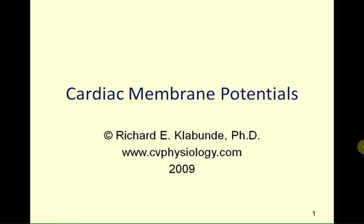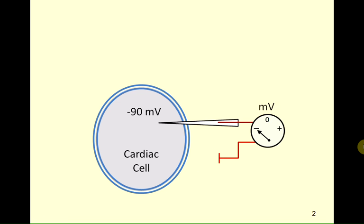Welcome to Cardiovascular Physiology Concepts and a mini lecture on cardiac membrane potentials. Let us begin with a resting non-pacemaker cardiac cell. If you were to measure the electrical potential across the cell membrane, you would find that the membrane potential would be about minus 90 millivolts relative to the outside of the cell.